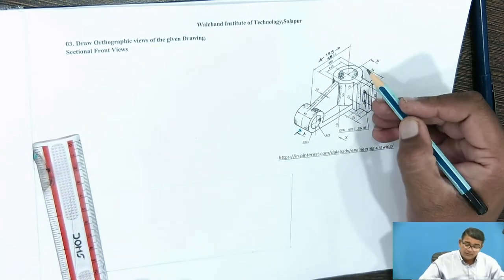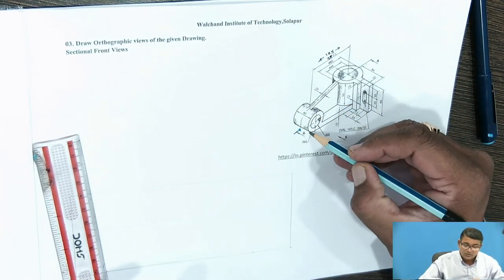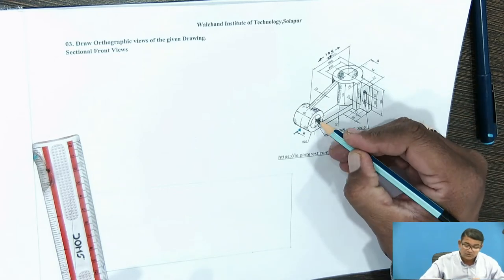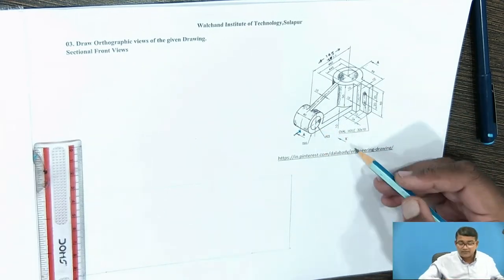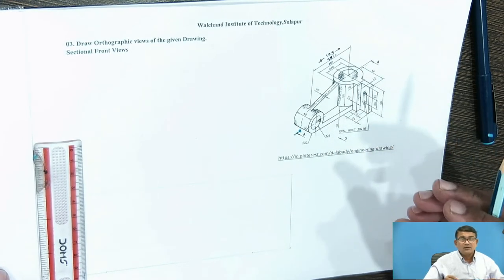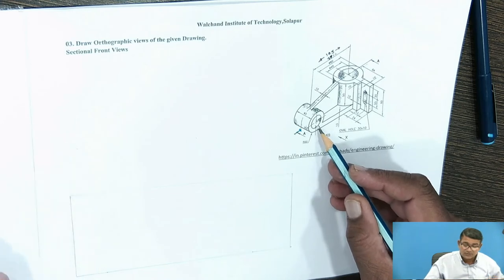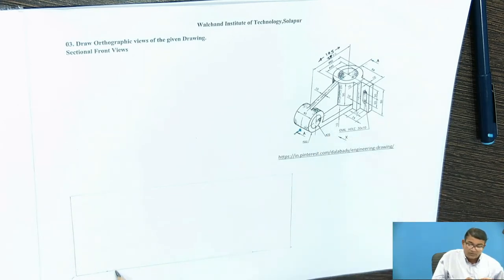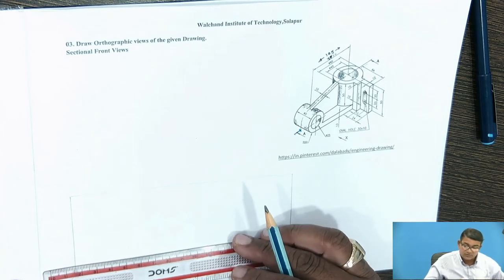In this half part the section is to be removed. The circular part and its surface we have to see as it is. First, draw the circular part. In this view the circular part is parallel to you, so you get the true shape of this circle. Fix the center line of this circle — it is given as R20, so from this end you travel 20 mm and 20 mm and fix the center line.